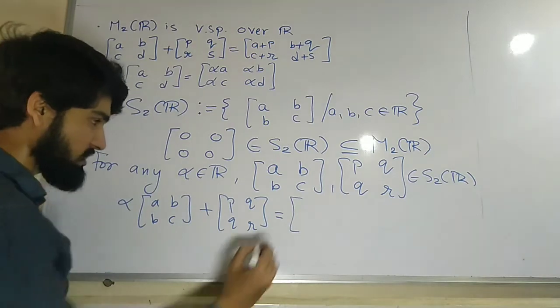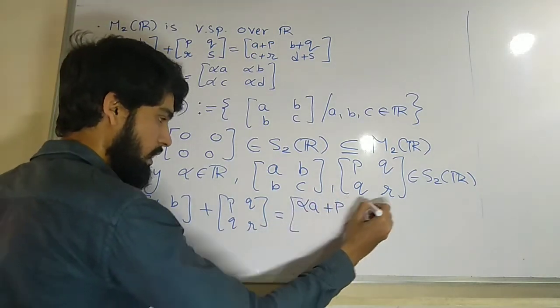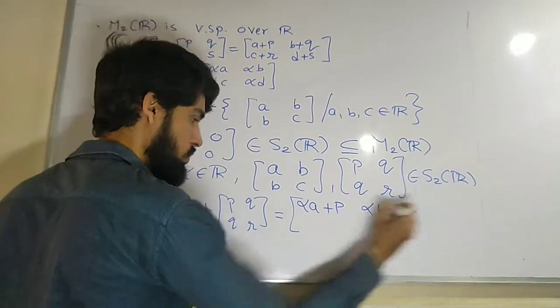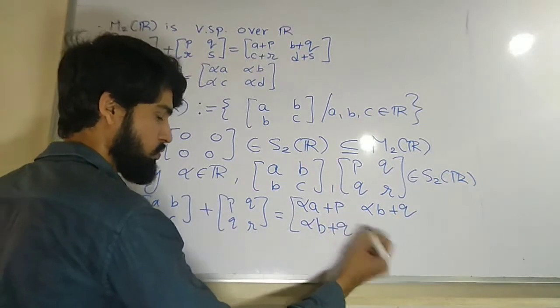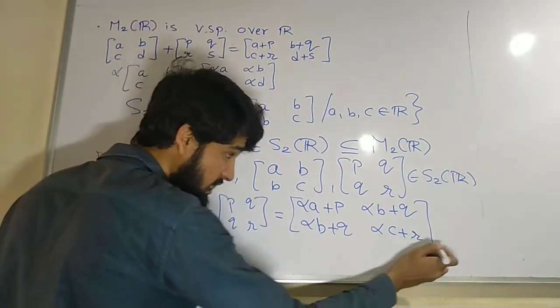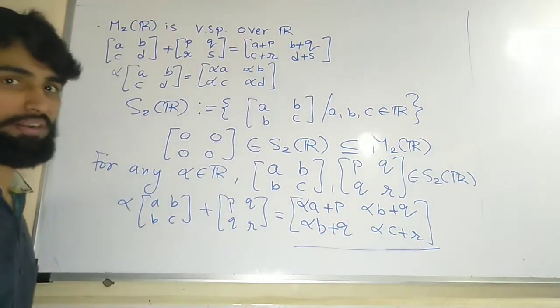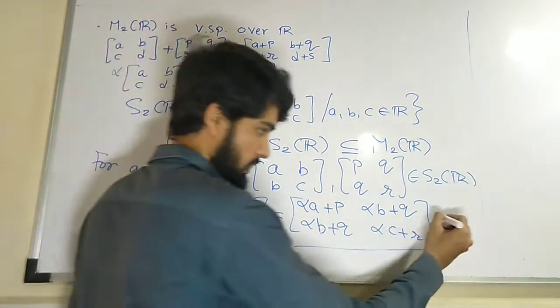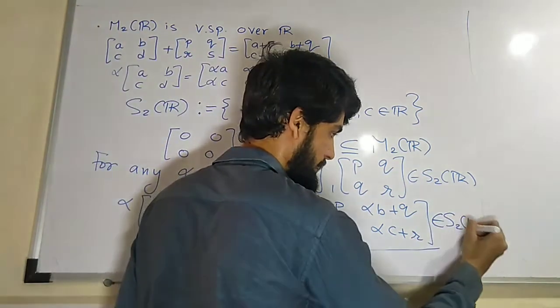We know that the answer will be [alpha a plus p, alpha b plus q; alpha b plus q, alpha c plus r], and the resultant matrix is again a symmetric matrix, correct, the resultant matrix is again a symmetric matrix.